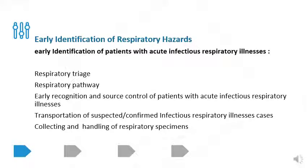It's really critical to have early identification of patients with acute infectious respiratory illnesses through respiratory triage and by implementing a respiratory pathway, by early recognition and source control of patients with acute infectious respiratory illnesses, by implementing transportation of suspected or confirmed infectious respiratory illness cases, and through collecting and handling of respiratory specimens appropriately.